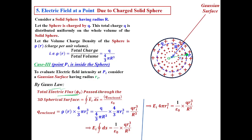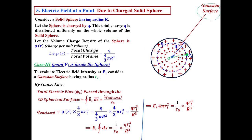Here Q_enclosed is the total charge enclosed by the Gaussian surface — you must not forget this. The Gaussian surface has radius r_i, and the charge Q is uniformly distributed inside the total volume 4/3 π R³ of the solid sphere. However, this Gaussian surface does not enclose the entire sphere; it encloses only the part of the sphere having radius r_i. So we need to calculate how much charge is enclosed by this Gaussian surface.